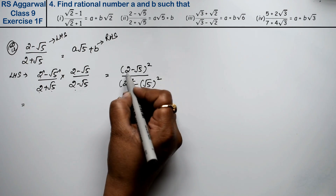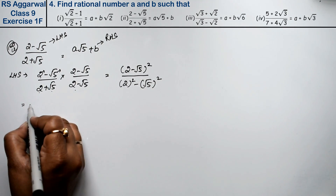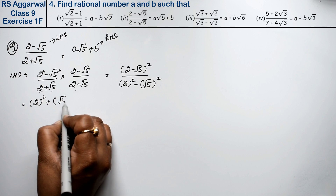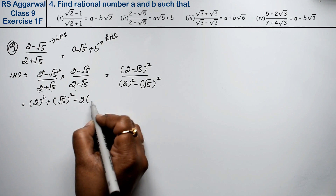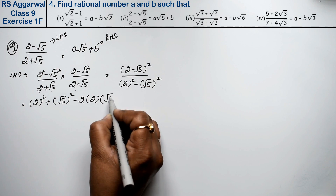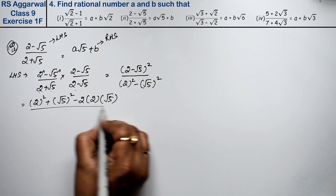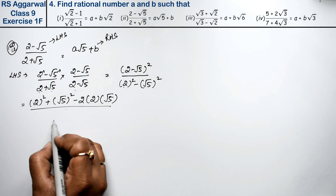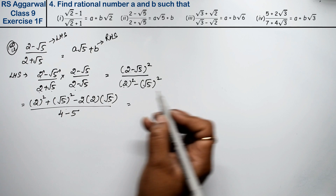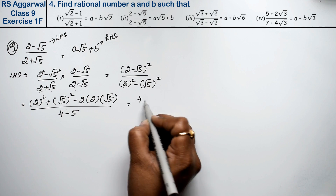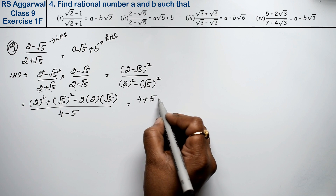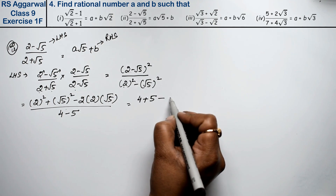The numerator becomes (2 minus root 5) whole square: A squared plus B squared minus 2AB, which gives 4 plus 5 minus 2 times 2 times root 5, that is 4 plus 5 minus 4 root 5. The denominator: 2 squared is 4, root 5 squared is 5, so 4 minus 5 equals minus 1.